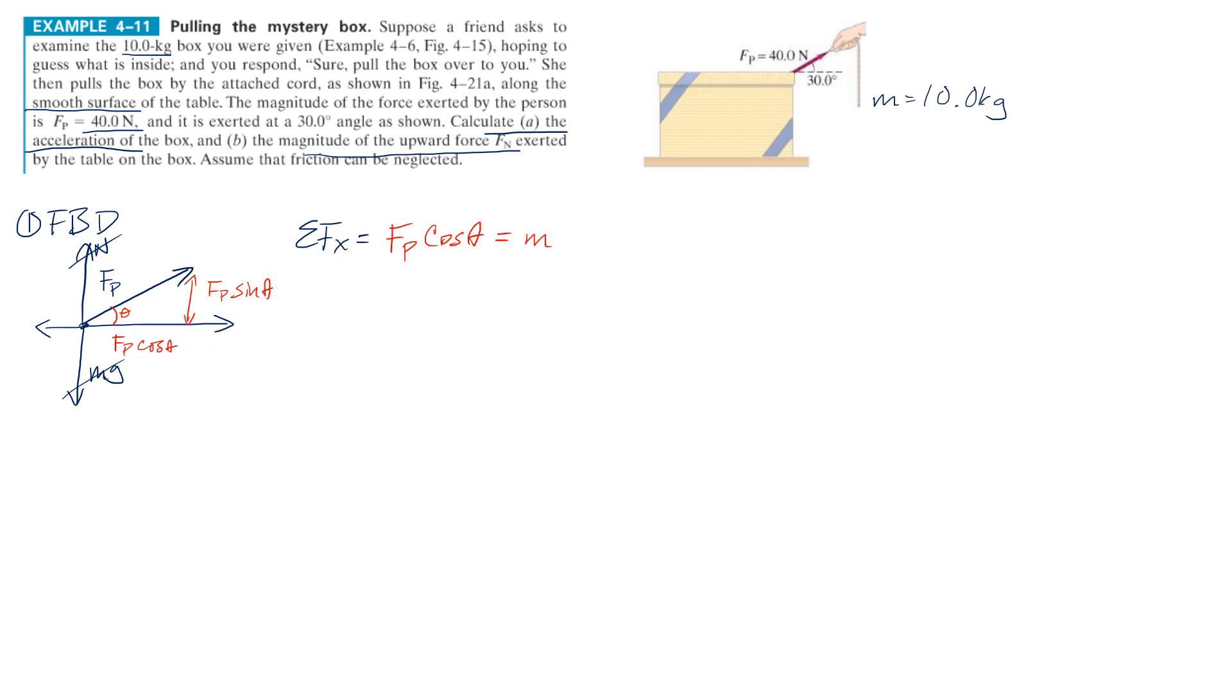So my force along the x is going to be Fp cosine theta. There's no friction going the other way, so we're done. That's the only x vector, right? There's no friction because it's on a smooth surface. That's going to equal to m times a. That makes it really easy. To solve for a, a is basically just this thing, Fp cosine theta divided by the mass. So I just got to plug in. So that means our acceleration is equal to the force. It's right here, 40 newtons, 40.0 newtons, cosine theta. My theta is 30.